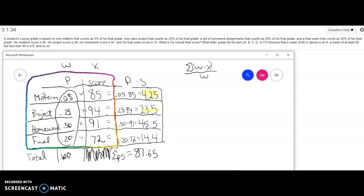And you'll see that I wrote the numbers that you come up with right here. So 4.25, 23.5, 45.5, and 14.4. When you add those all together